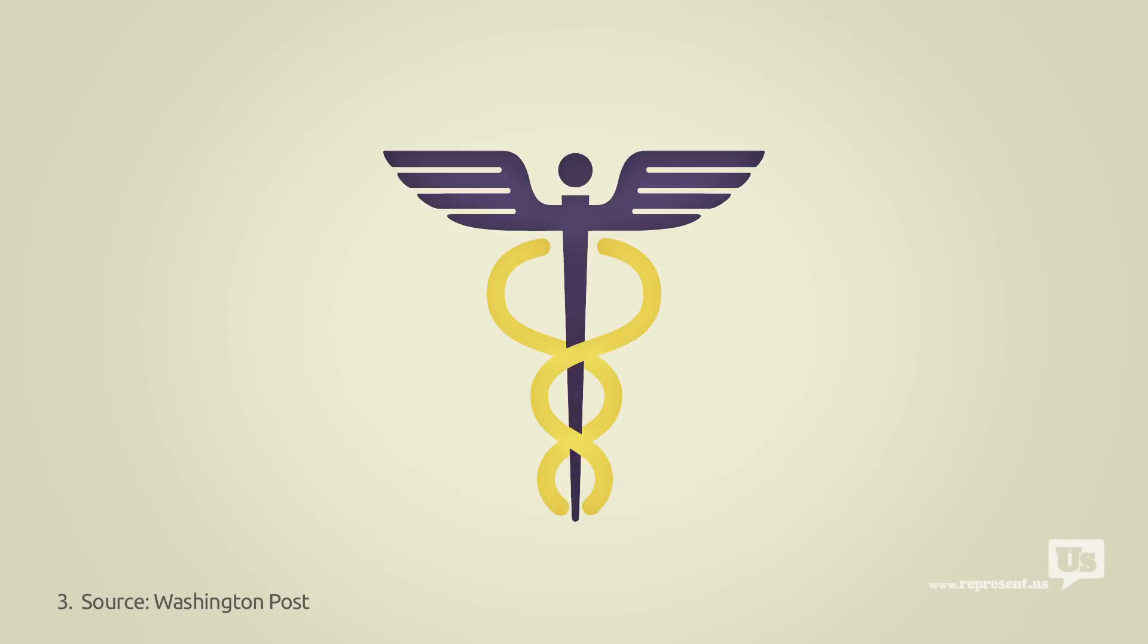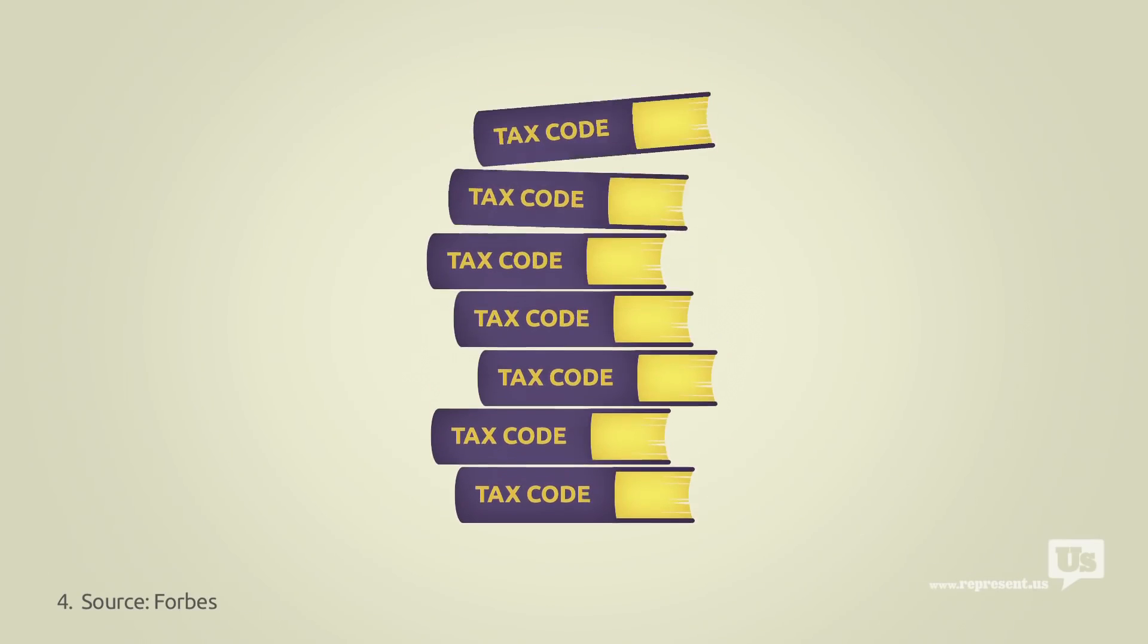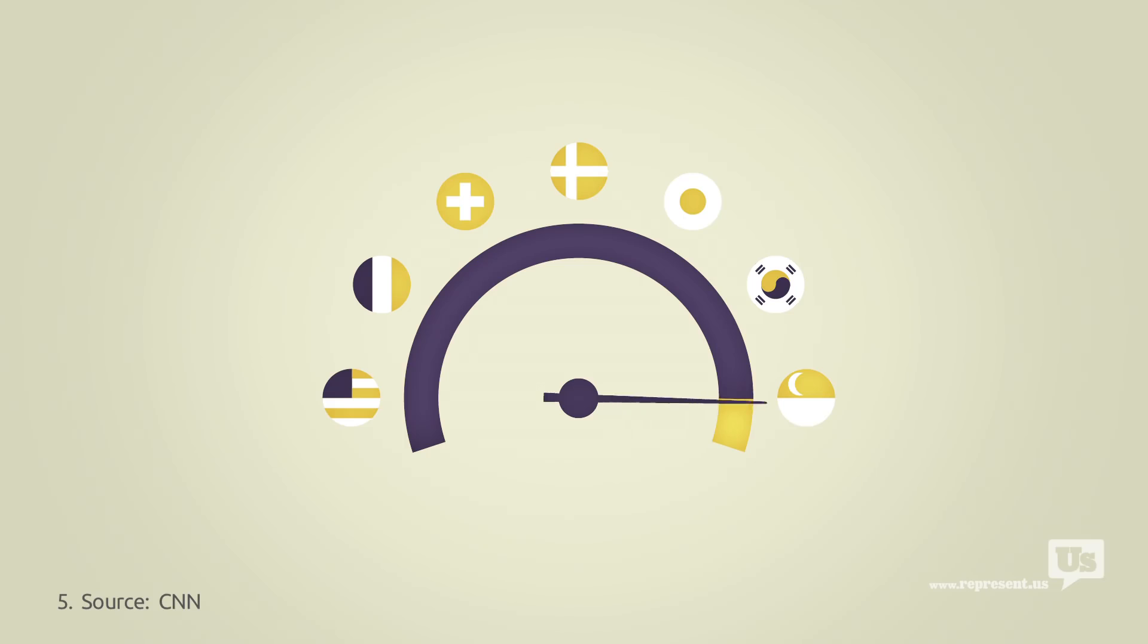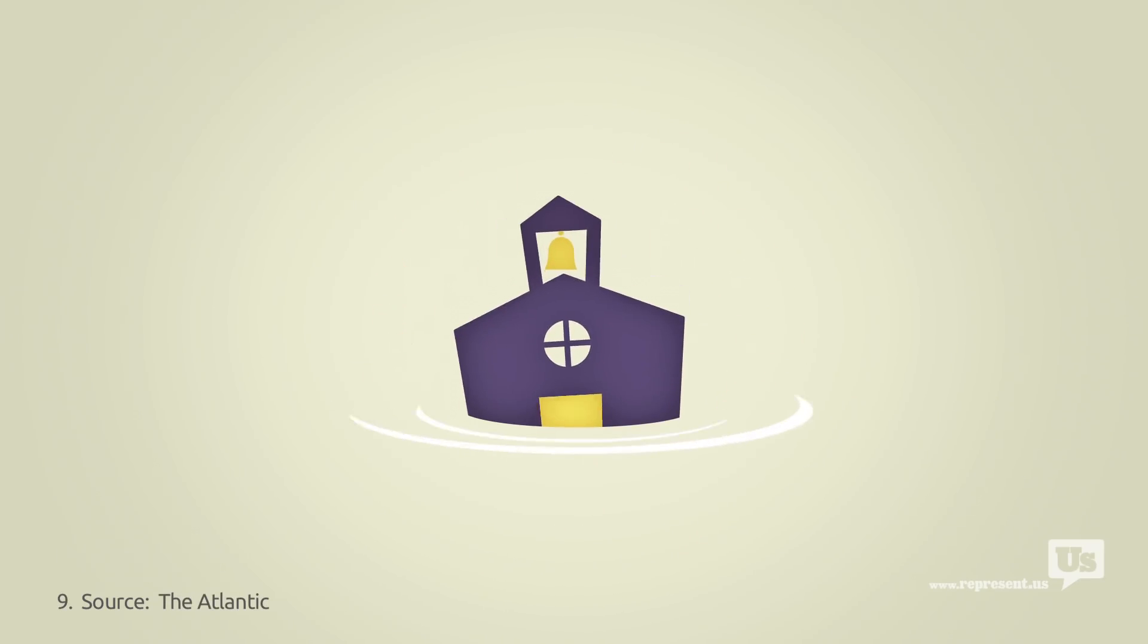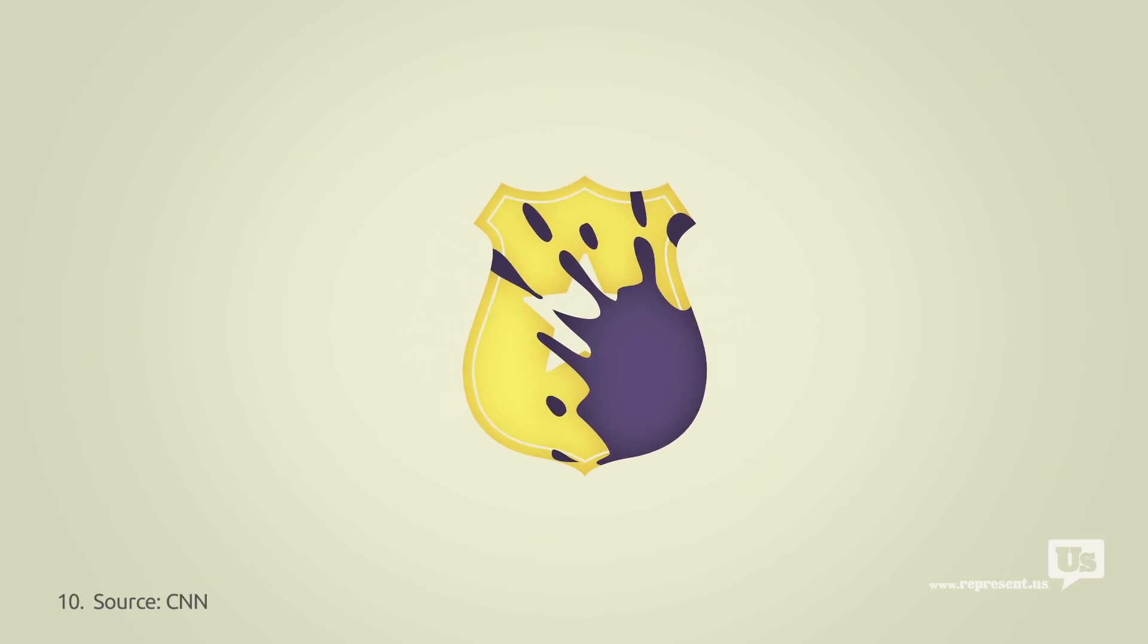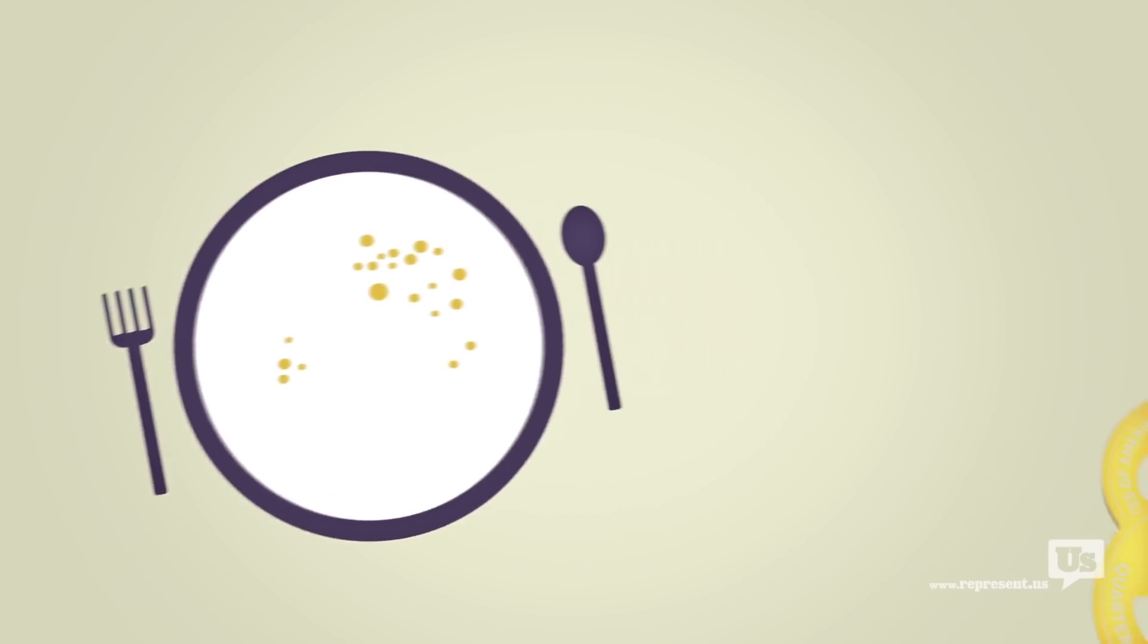We pay for it with the most expensive healthcare in the world. We pay for it with a tax code that's a complete mess. We pay for it with internet that's slower and more expensive. With wasteful spending, a floundering education system, a catastrophic drug war, and one in five American children born into poverty. Almost every major issue we face as a nation can be traced back to this graph.